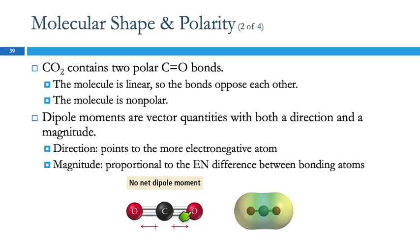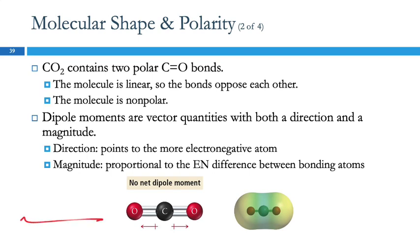We have two dipole moment vectors being pulled in opposite directions. Dipole moments are vector quantities — they have direction and magnitude. The magnitude of these two vectors is the same because the elements are the same, and the directions are exactly opposite. In two dimensions this is much easier than three dimensions.